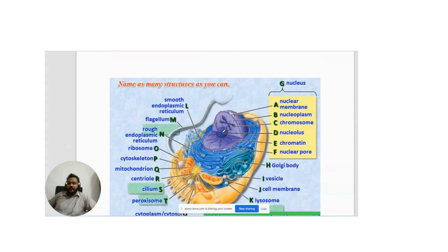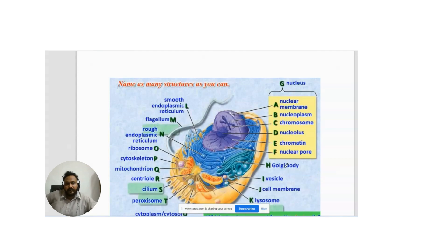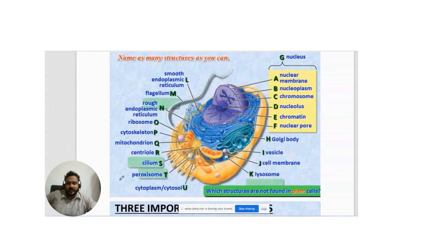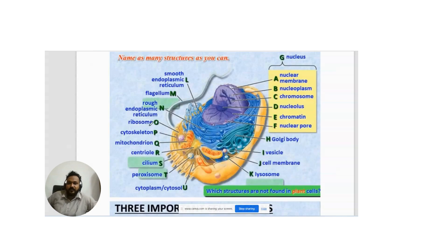In this image you can see the different organelles and components of the cell. The nucleus is the center part of the cell — the brain — covered by the nuclear membrane, and it contains nucleoplasm, chromosomes, nucleolus, chromatin, and nuclear pores, which are responsible for transportation of protein molecules. Other components include the Golgi apparatus, vesicles, cell membrane, lysosomes, cytoplasm — a jelly-like structure — and the centriole. Mitochondria is called the powerhouse of the cell; it generates energy stored in the form of ATP, adenosine triphosphate.